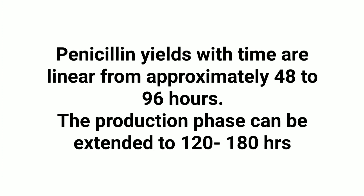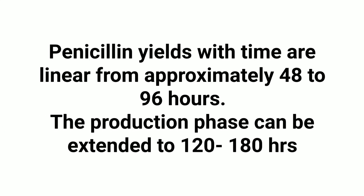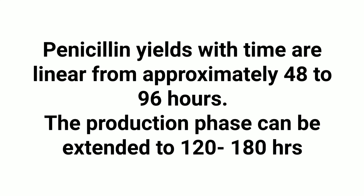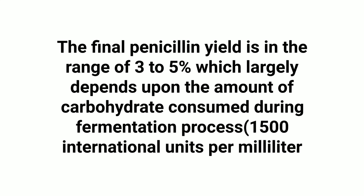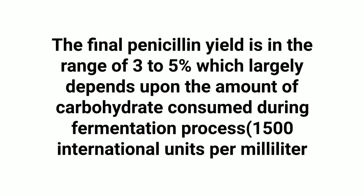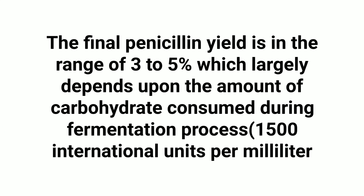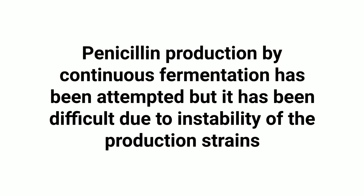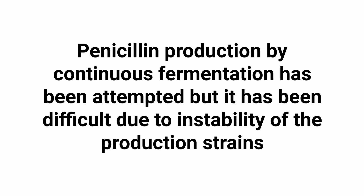Penicillin yields with time are linear from approximately 48 to 96 hours; the production phase can be extended to 120 to 180 hours. The final penicillin yield is in the range of 3 to 5%, which largely depends on the amount of carbohydrate consumed during the fermentation process. Penicillin production by continuous fermentation has been attempted, but it has been difficult due to the instability of the production strains.